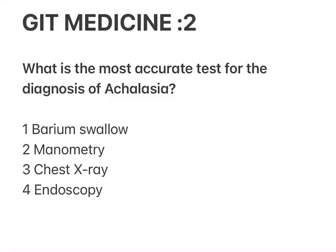What is the most appropriate test for the diagnosis of achalasia? Option one: barium swallow. Option two: manometry. Option three: chest x-ray. Option four: endoscopy. The correct answer is manometry.